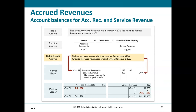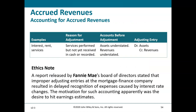Summary of accrued revenues: examples are interest, rent, and services. Reason for the adjustment — services were performed but not yet received in cash or recorded. Before adjustment, assets are understated (no receivable recorded) and revenues are understated. The adjusting entry is: debit assets (Accounts Receivable), credit revenues.